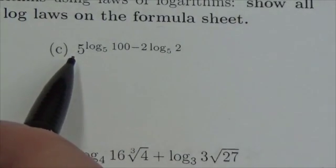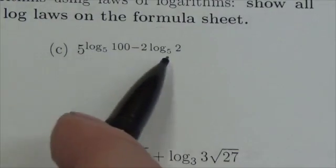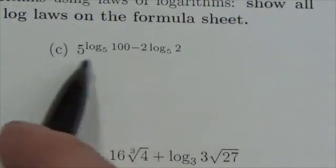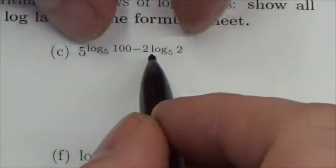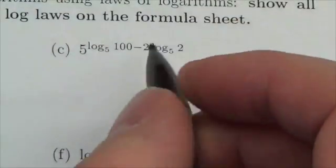Notice I've got base 5 to log base 5 here, so something's going to cancel, but I really can't do this until I have the exponent as a single exponent.